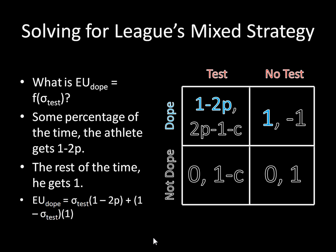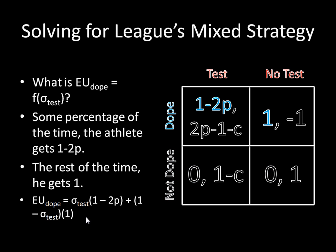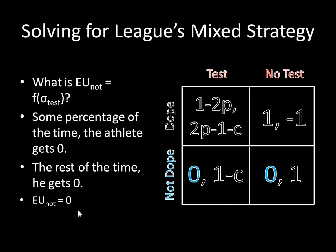The second part is asking what the expected utility is for the player for not doping. That's simple: regardless of what the league does, the player gets zero. So the expected utility for not doping is simply zero.